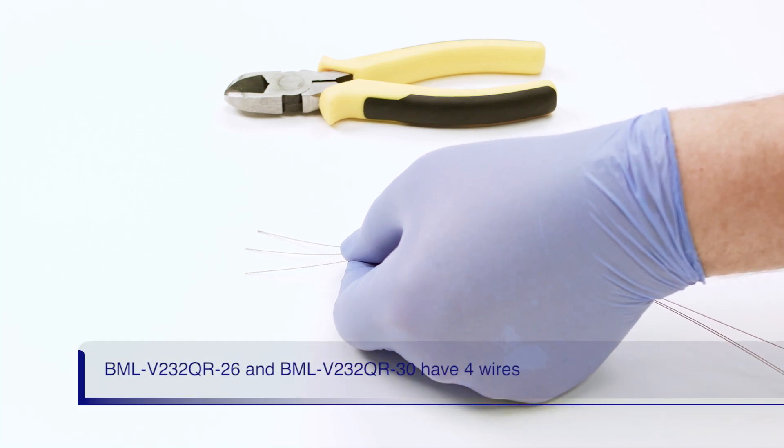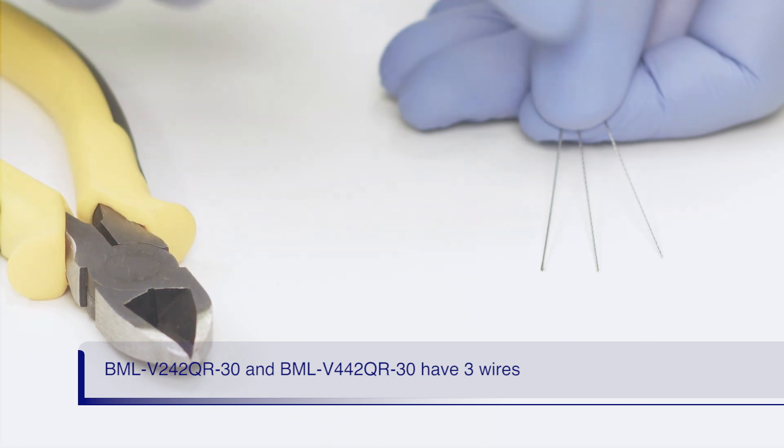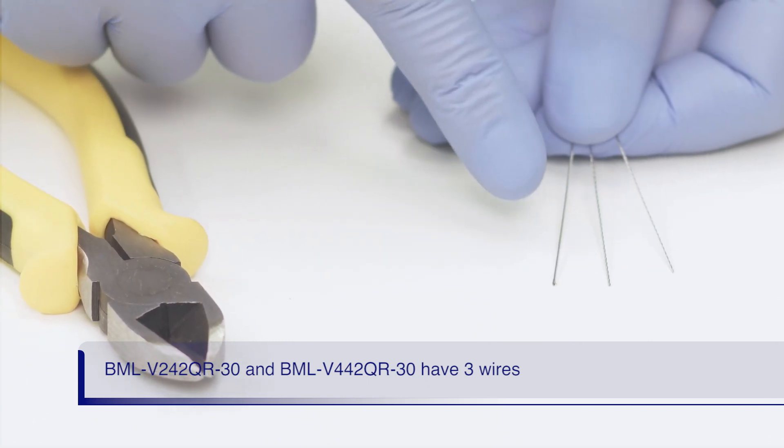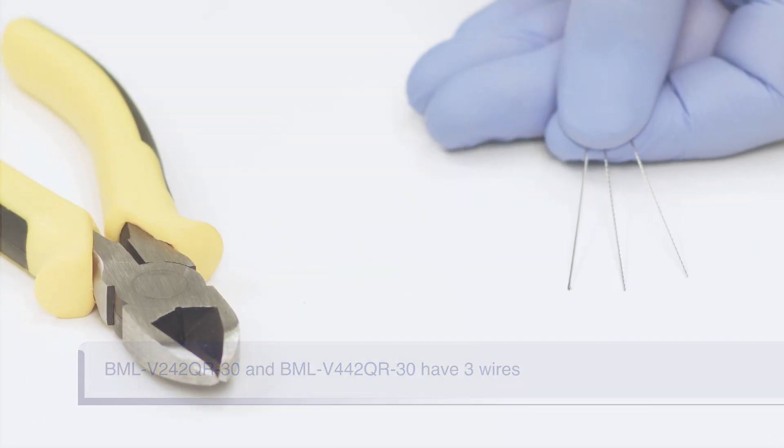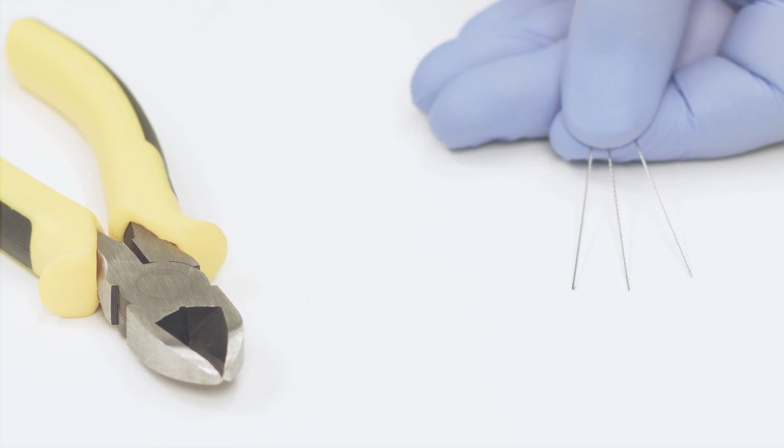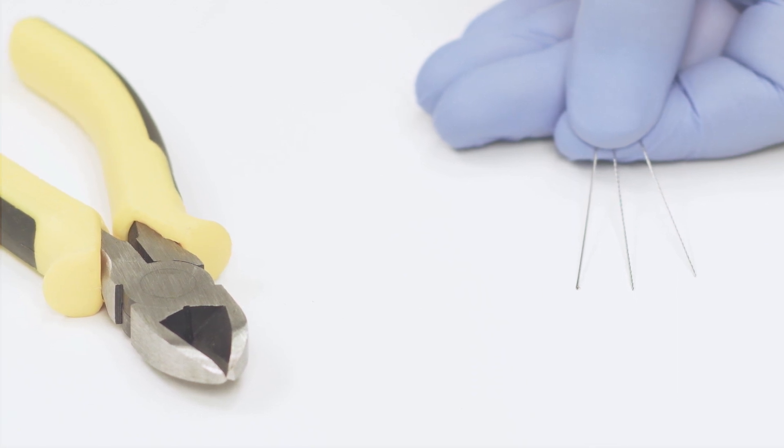The standard wire versions of Lithocrush V have four wires. The hard wire, bullet tip version, and distally wire-guided version of Lithocrush V each have only three wires. The distally wire-guided version of Lithocrush V is shown here.